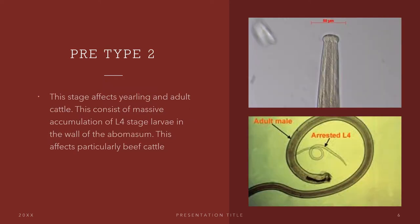Now let's talk about pre-type 2. This stage affects yearling and adult cattle and consists of massive accumulation of L4 stage larvae in the wall of the abomasum. This affects particularly beef cattle.